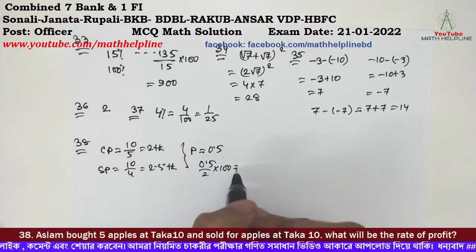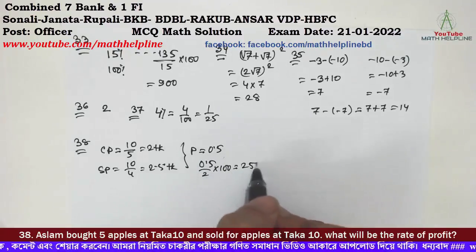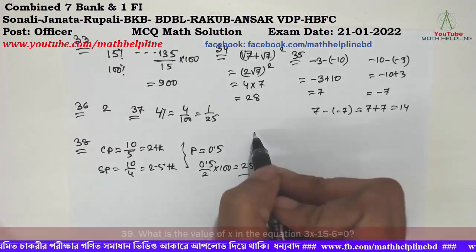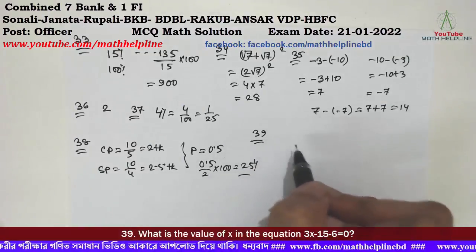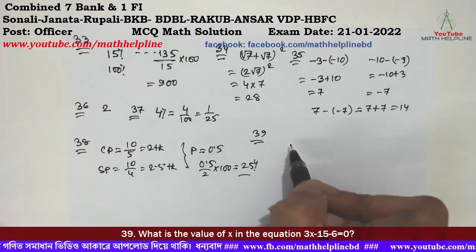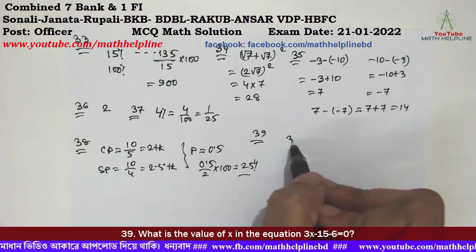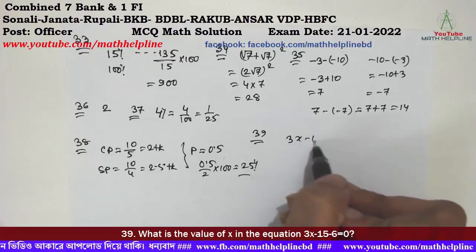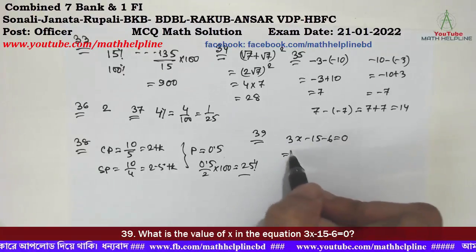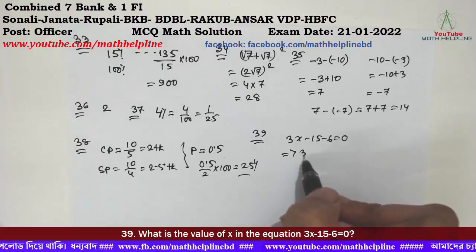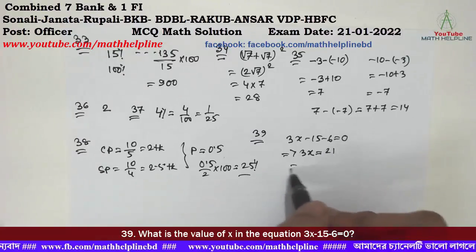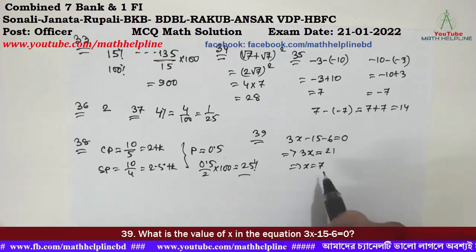Total is 25.8 taka. Number 39: What is the value of x in the equation 3x - 15 = 6? So 3x equals 21, therefore x equals 7. Answer: 88%.